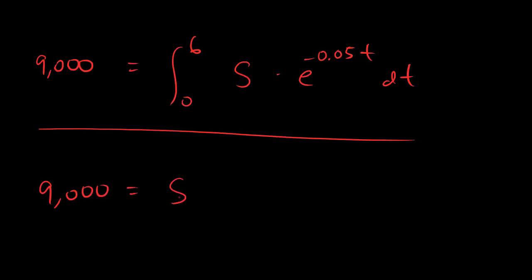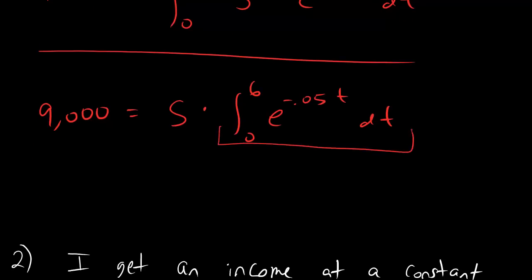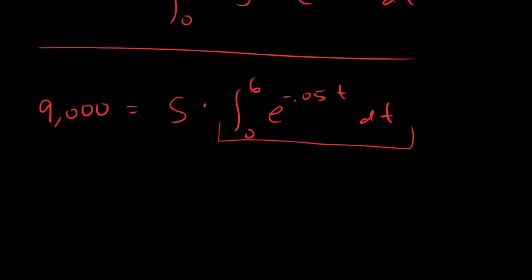So we can get something like this: S times integral from 0 to 6, e to the minus 0.05t dt. Now what we have is something that we can actually plug into a calculator, dudes. So if we take that and calculator it up, then here's what our equation becomes: 9,000 equals S times 5.18. 5.18.